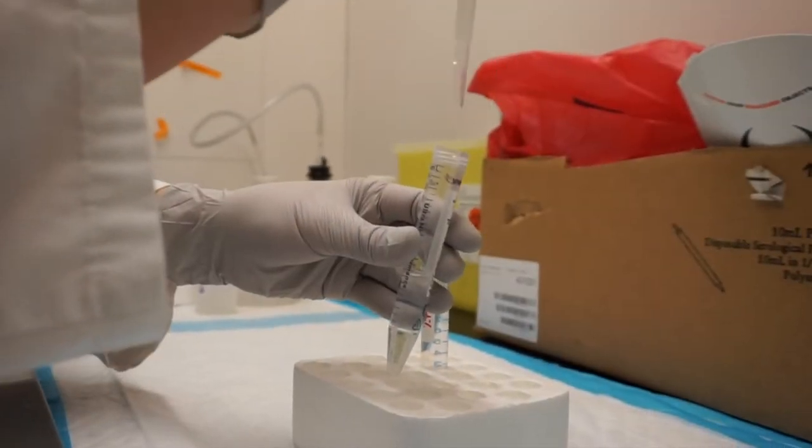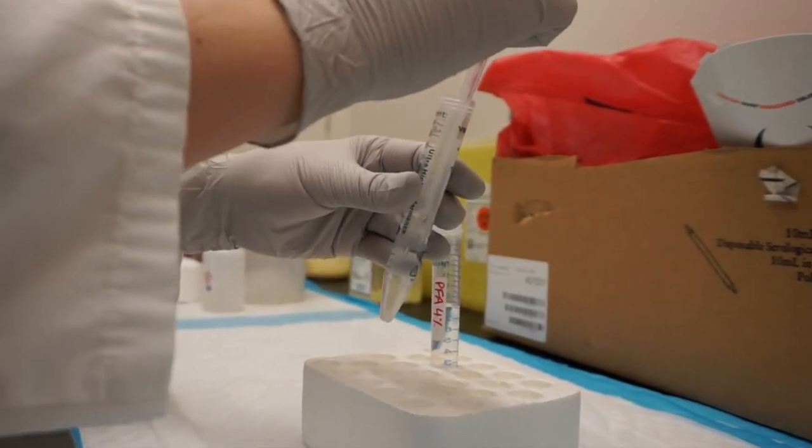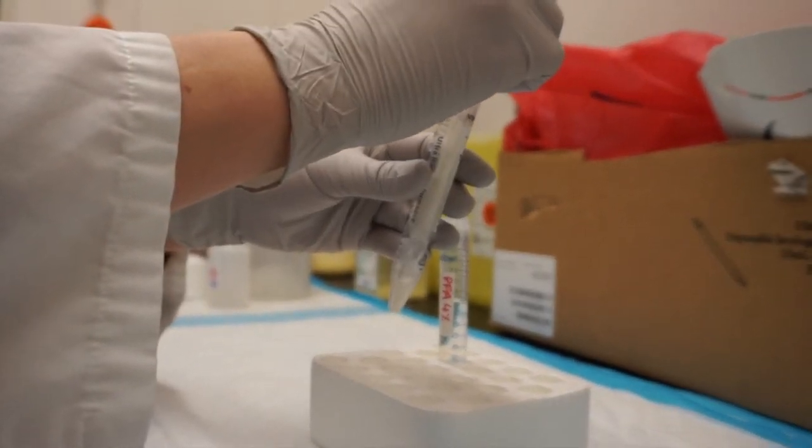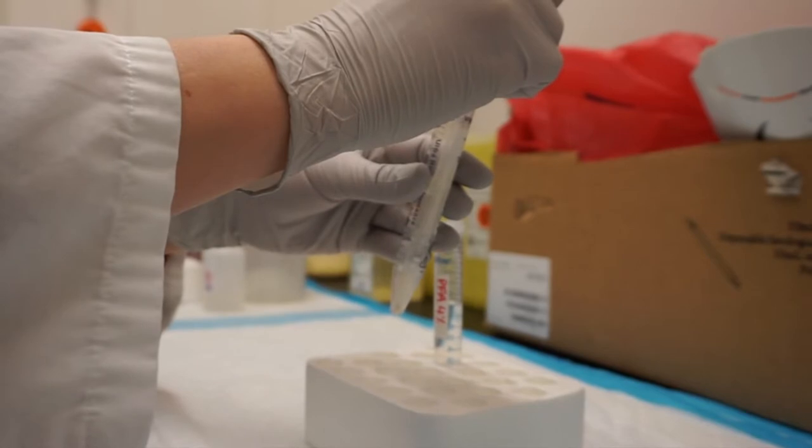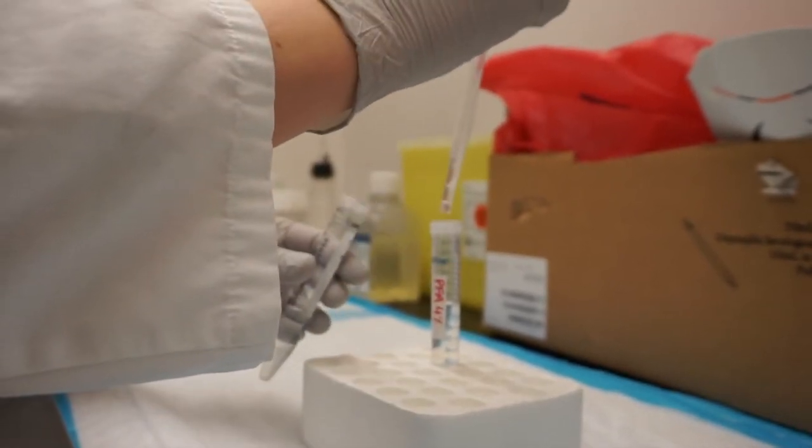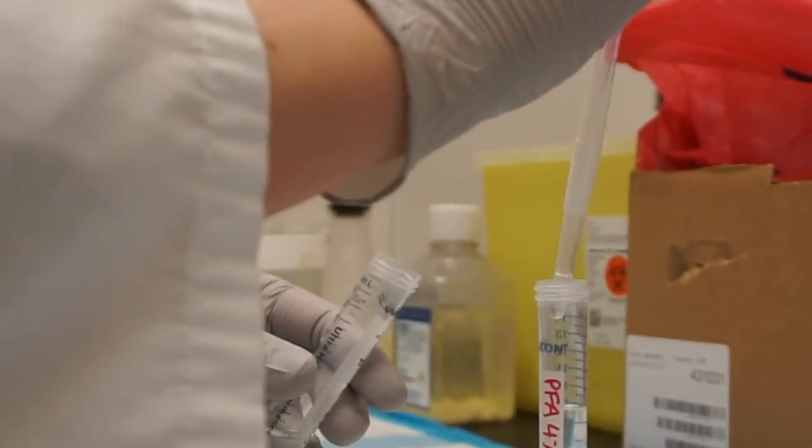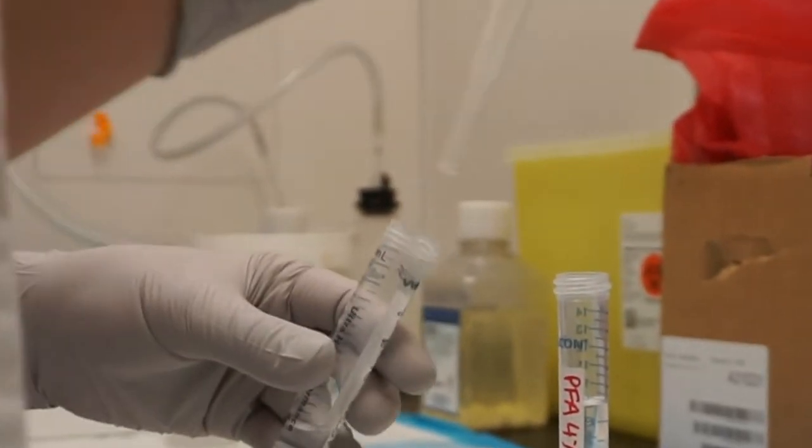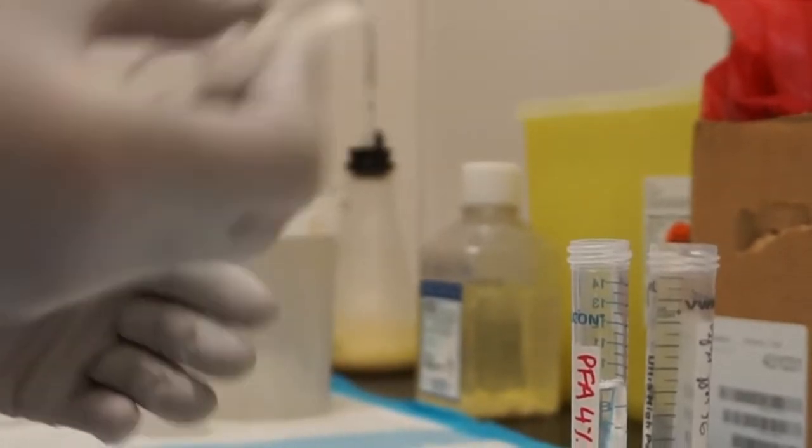After having collected your organoids and washed them with PBS, transfer them to a tube containing a solution of 4% paraformaldehyde using a wide bore pipette. This should be done under a chemical hood. Organoids can be incubated for one hour at room temperature or overnight at 4 degrees Celsius.